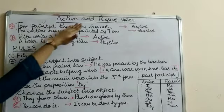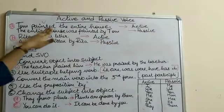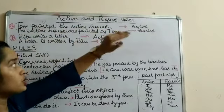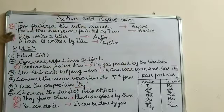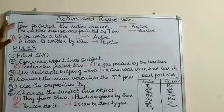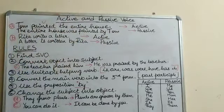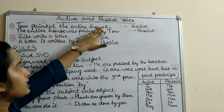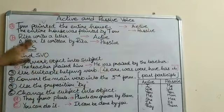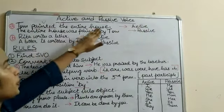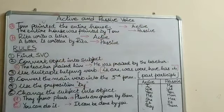Tom painted the entire house. The entire house was painted by Tom. If you look at these two sentences, you will find that both sentences have the same meaning, but the only difference is a change in structure. 'Tom painted the entire house' is in the active voice, and 'The entire house was painted by Tom' is in the passive voice.